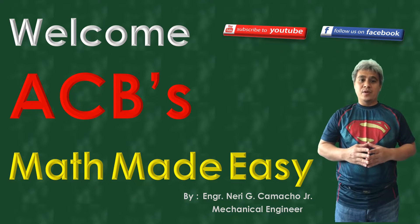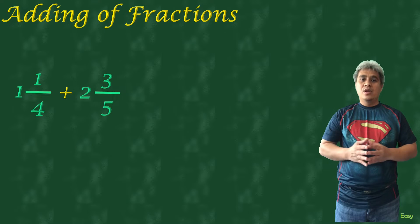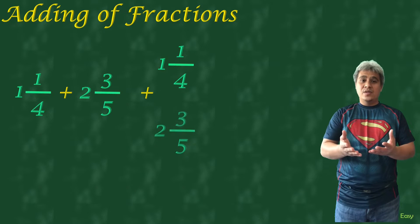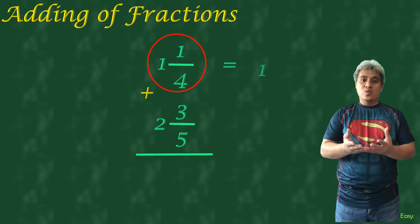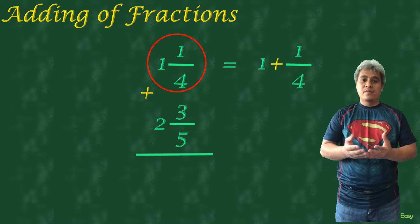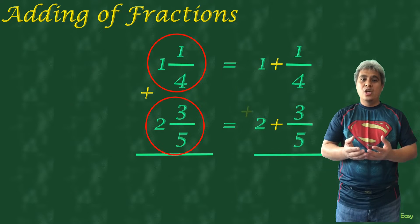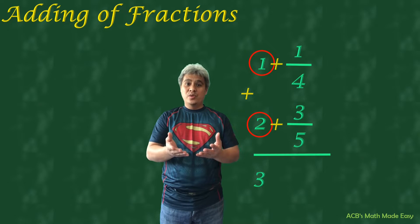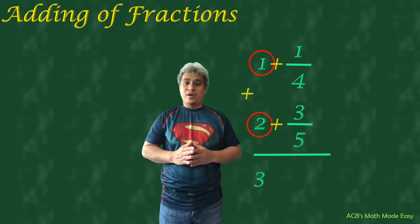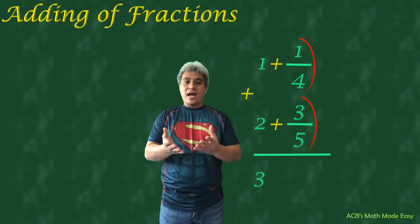Our first example is 1¼ plus 2⅗. We can arrange these fractions vertically to see it clearly. 1¼ is exactly the same as 1 plus ¼, and 2⅗ means 2 plus ⅗. We can add first the whole numbers: 1 plus 2 equals 3. Do not forget that we already added the whole number — we will just add the fractions, ¼ and ⅗.